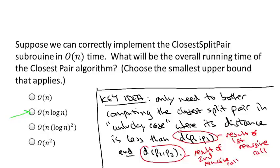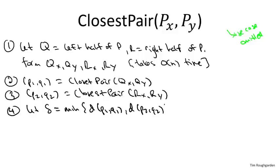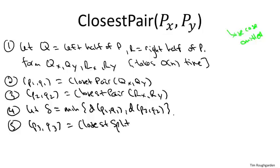Let's rewrite the high-level recursive algorithm to use this observation. Before invoking closest split pair, we see how well our recursive calls did: we define delta as the minimum of the distance between P1, Q1 and P2, Q2 — the closest pair found by either recursive call. We pass this delta as a parameter into our closest split pair subroutine. Then as before we compare the three candidate closest pairs and return the best of the trio.